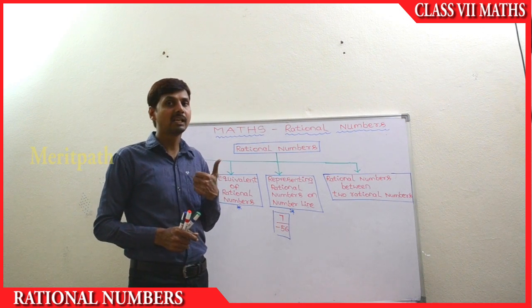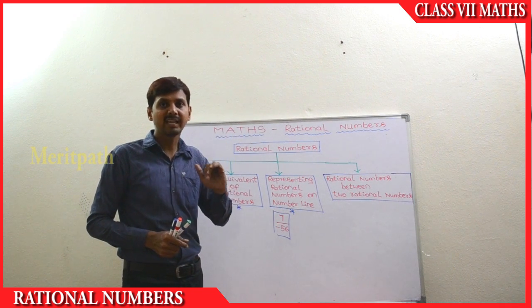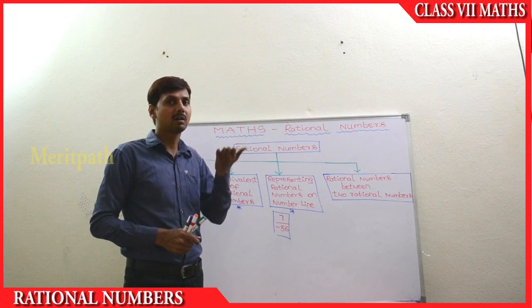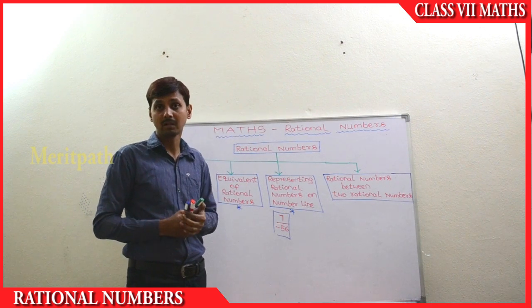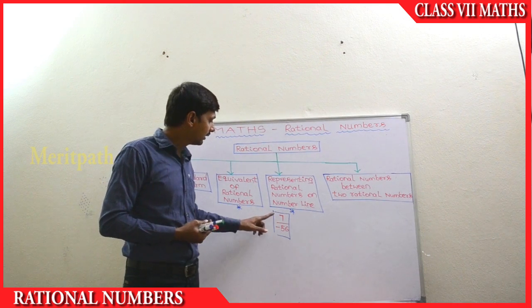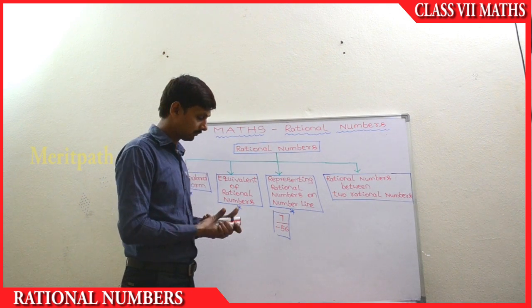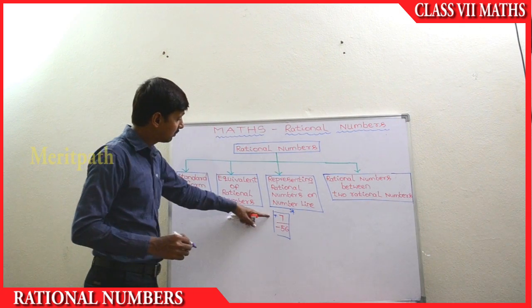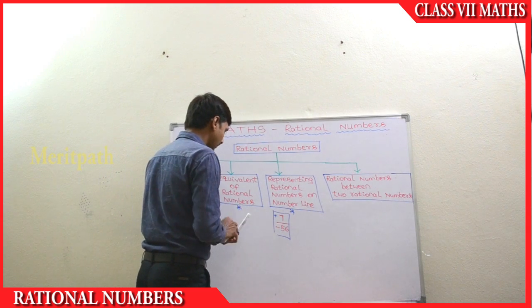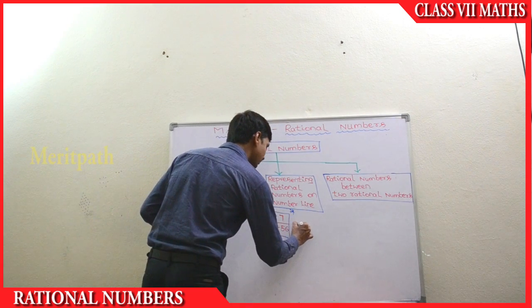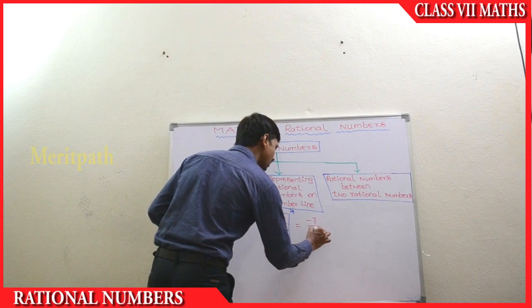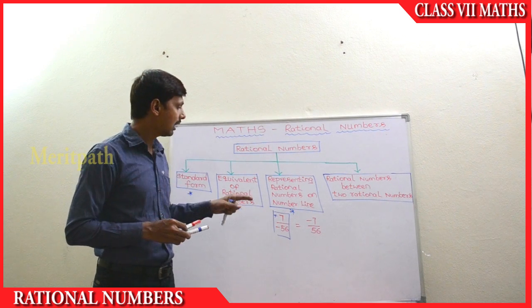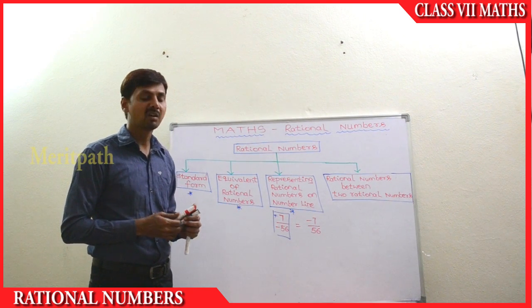If the denominator has a negative value, we need to make it positive by moving the negative sign to the numerator part. By the properties of signs — plus divided by minus gives minus, minus divided by plus gives minus, minus divided by minus gives plus. So here, plus divided by minus gives minus, so we write minus 7 divided by 56. Now this is the standard form of the rational number.